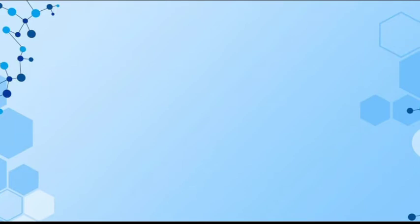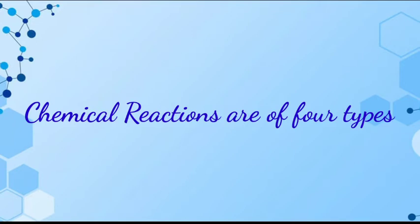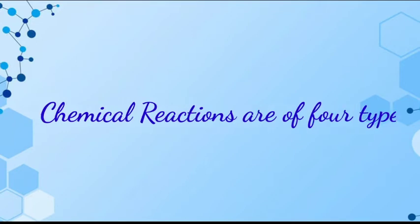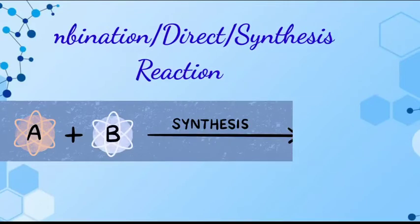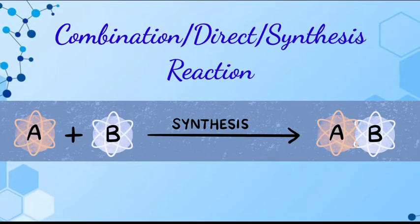I am looking at types of chemical reactions. Chemical reactions are of four types. First is combination reaction or direct combination or synthesis reaction. This is a reaction in which two or more substances combine together to form a single substance, called combination or synthesis reaction.